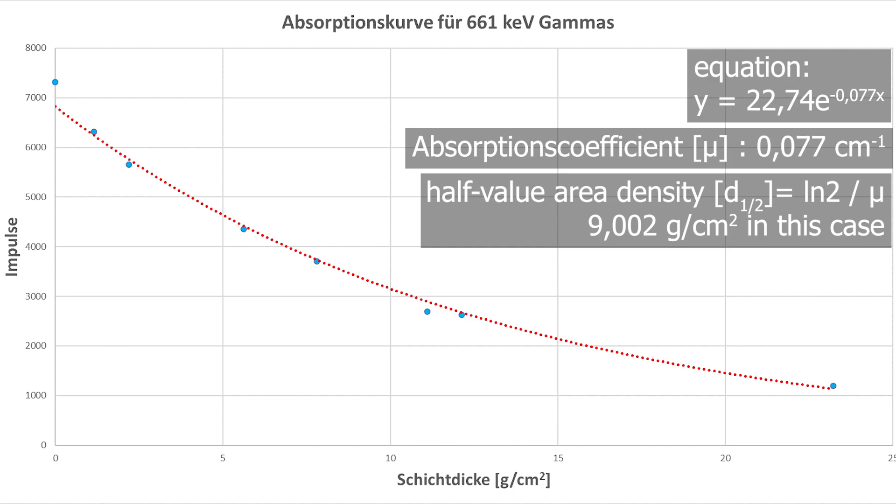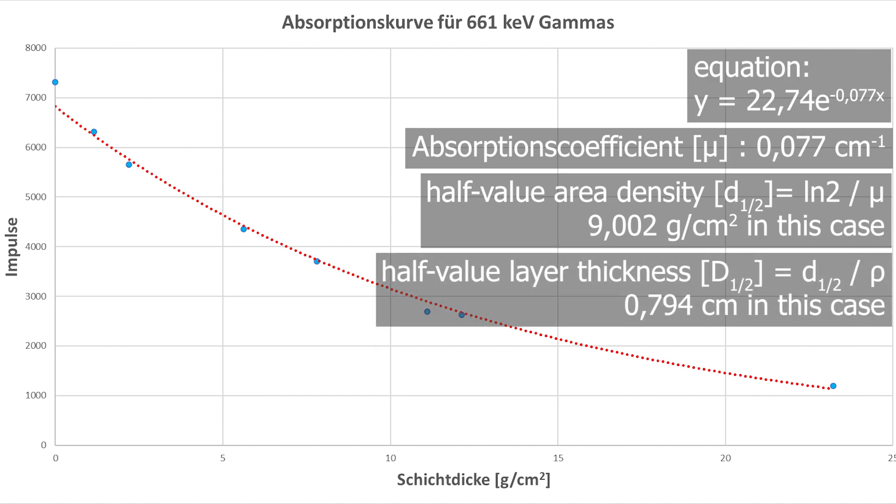In our case it's 9.002 grams per square centimeter. Our calculation isn't over yet. We want the half value thickness; to get that, divide by the density of the material. In our case it's lead which is 11.342 grams per cubic centimeter. In the end you get a half value thickness of 0.794 centimeters.